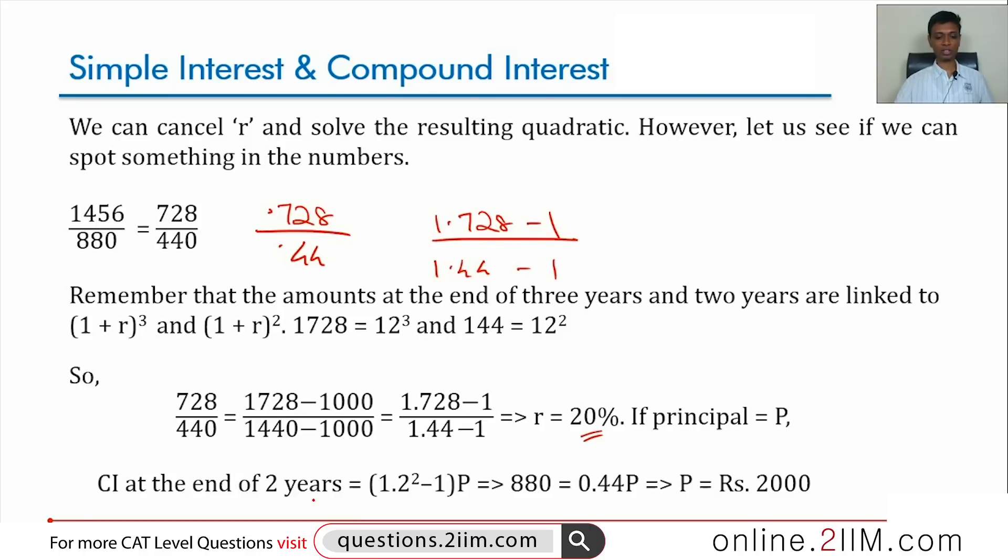Compound interest at the end of two years is 1.2 square minus 1 times P. This is 880. 0.44 P is 880 or principal is rupees 2000. This is the final bit actually finding the value.